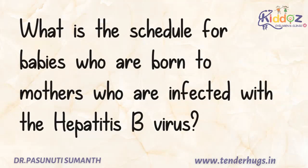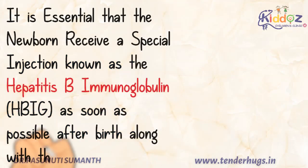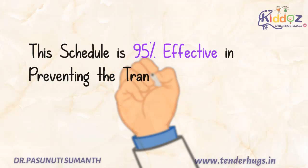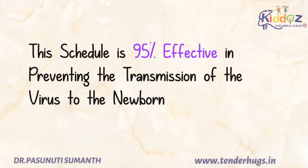For babies born to Hepatitis B infected mothers, along with the Hepatitis B vaccine, these newborns should receive a special injection known as Hepatitis B immunoglobulin as soon as possible after birth. The cost of this immunoglobulin is around 6,000 rupees, and this schedule is 95% effective in preventing transmission of the virus to the newborn baby.